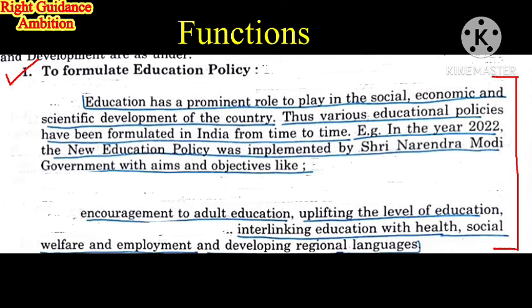For example, in 2020, the new education policy was implemented by the Narendra Modi government. Its main objectives included encouragement of adult education — educating those who could not complete their education for any reason — upliftment of the level of education, and interlinking education with health and social welfare to create health awareness in children and improve society.